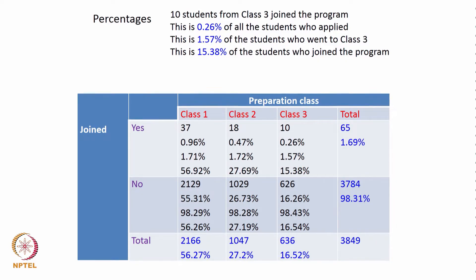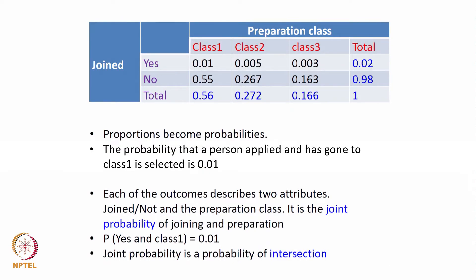We are going to generalize these proportions as probabilities. Out of the people who applied, 0.02 totally joined and 0.98 did not. Of those who applied, 0.56 came from class 1, 0.272 from class 2, and 0.166 from class 3. Each outcome describes two attributes — joined and preparation class — so it is a joint probability. Probability of yes and class 1 is 0.01.